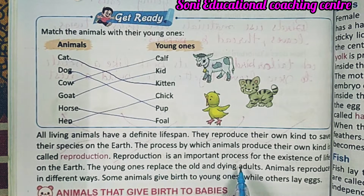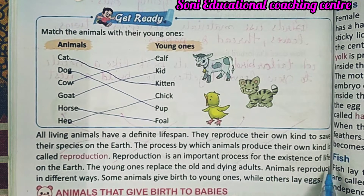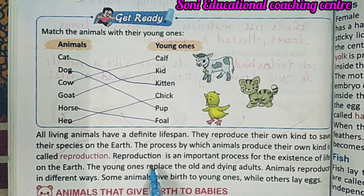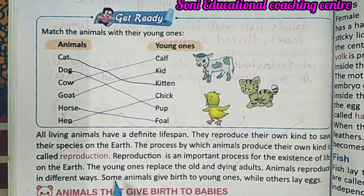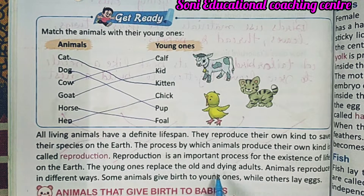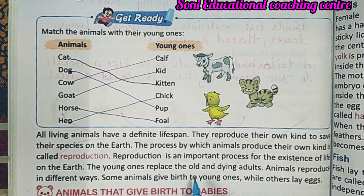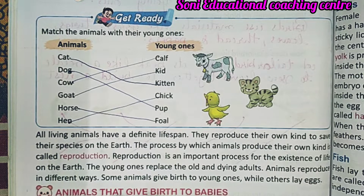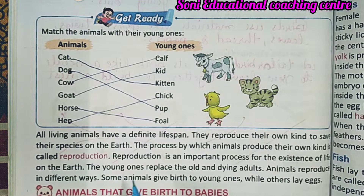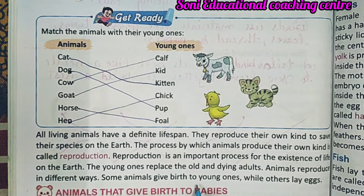Reproduction is an important process for the existence of life on the earth. और reproduction इसलिए जरूरी है क्योंकि इससे हमारी life इस earth पे exist करती है। The young ones replace the old and dying adults. Animals reproduce in different ways — जानवर अलग-अलग तरीके से reproduce करते हैं।